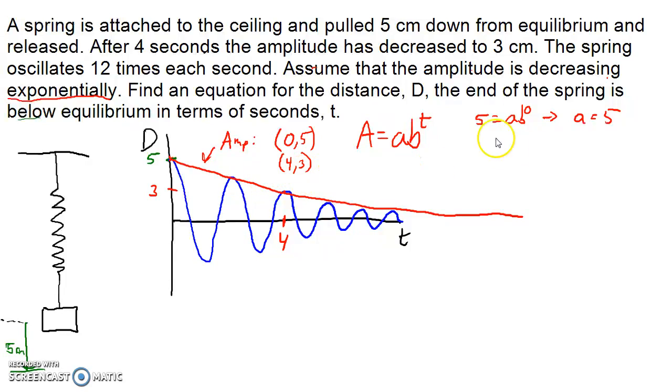Now let's use our second point here. The amplitude is 3. We know that a is 5 when t is 4, so we just plugged in 4 for t, 3 for the amplitude. And now we can go ahead and solve for b.